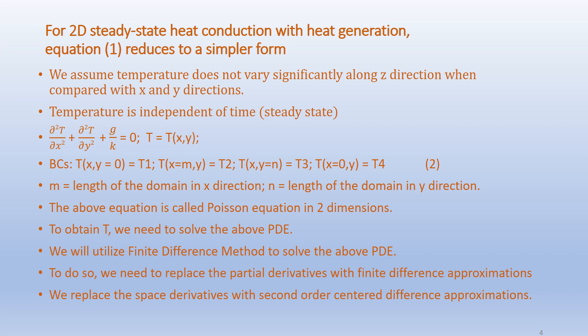T is a function of x and y. The boundary conditions are: T at (x, 0) = T1, T at (M, y) = T2, T at (x, N) = T3, T at (0, y) = T4, where M is the length of the domain in the x direction and N is the length in the y direction. The above equation is called the Poisson equation in two dimensions.